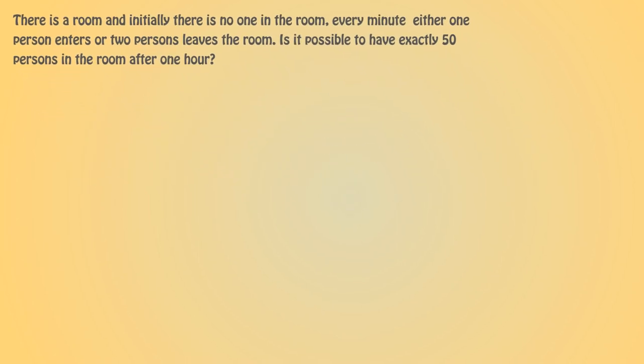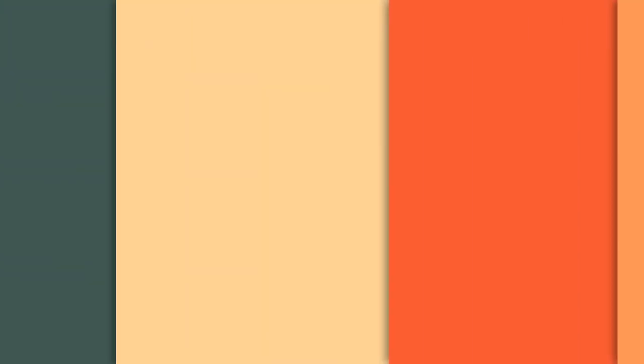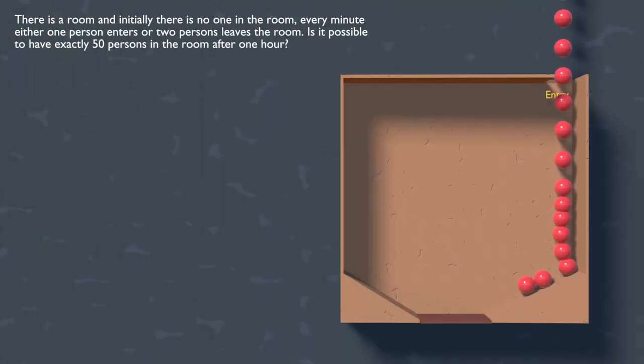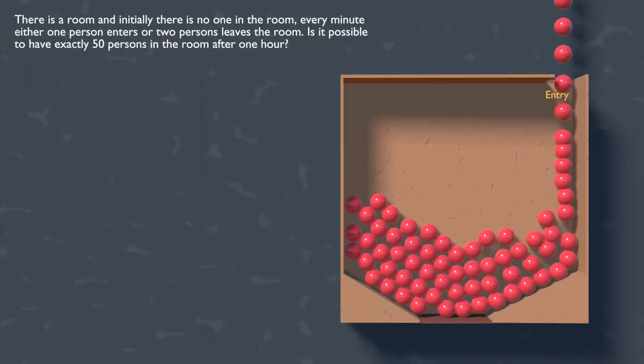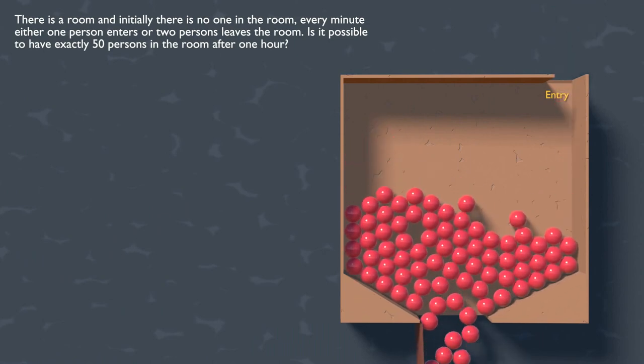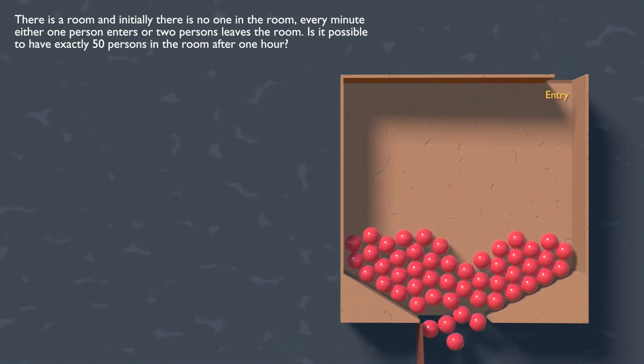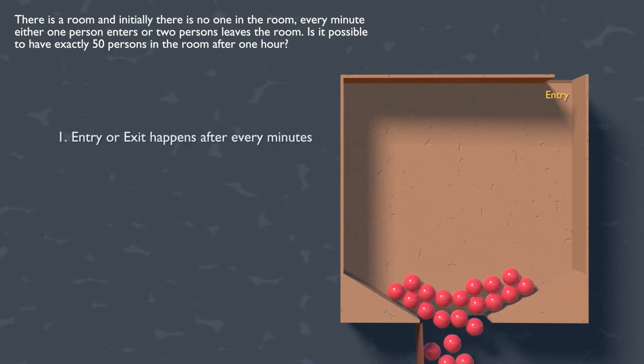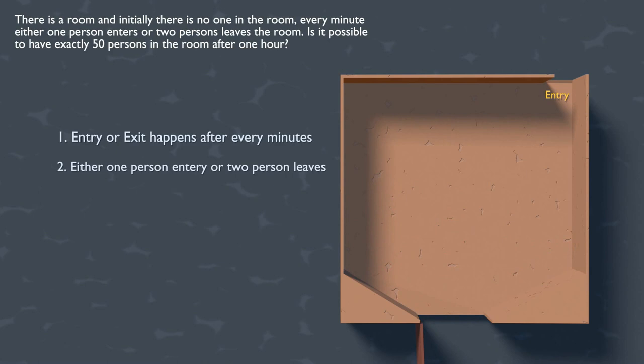The question is very simple to understand but a little tricky to answer. There is a room and a lot of persons. Anyone can enter and exit the room using the entry and exit doors. But there is a condition, the entry or exit happens after every minute and the entry is allowed for only one person and the exit is possible only in pairs.